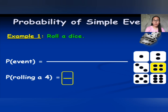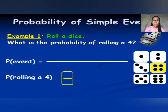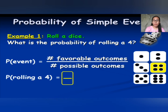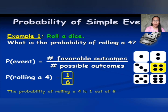Example 1: roll a die. What is the probability of rolling a 4? A die has 6 faces, numbered 1 to 6. The event is rolling a 4. There is only one face numbered 4, so there is only one favorable outcome, and the number of possible outcomes is 6. Therefore, the probability of rolling a 4 is 1 out of 6.